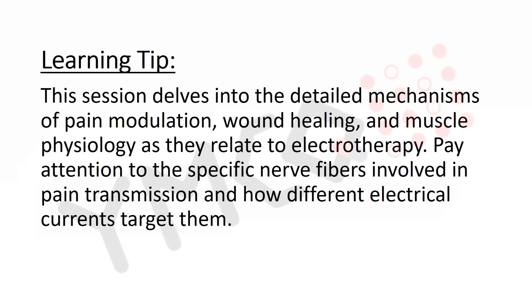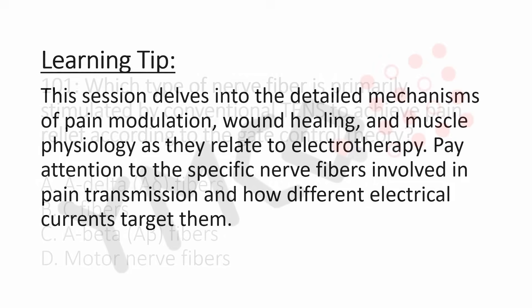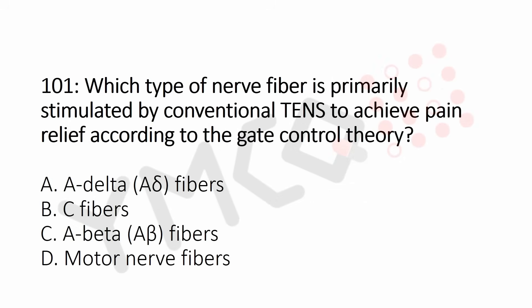Question number 101: Which type of nerve fiber is primarily stimulated by conventional TENS to achieve pain relief according to the gate control theory? Option A: A-delta fibers. Option B: C fibers. Option C: A-beta fibers. Option D: motor nerve fibers.